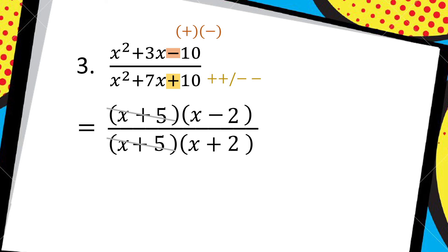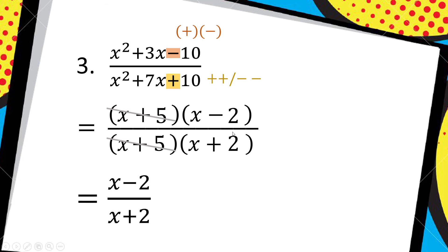Now I can start cancelling. I can see that the x plus 5 brackets can cancel. These ones here you can't cancel — you can't cancel the x's separately and the 2 separately and then leave the negative and the positive. You have to find a whole bracket that matches. x minus 2 and x plus 2 are totally different brackets, so that's my answer: x minus 2 over x plus 2. Don't try and cancel because you've got two terms on top and two at the bottom — you can't cancel the 2s or the x's.